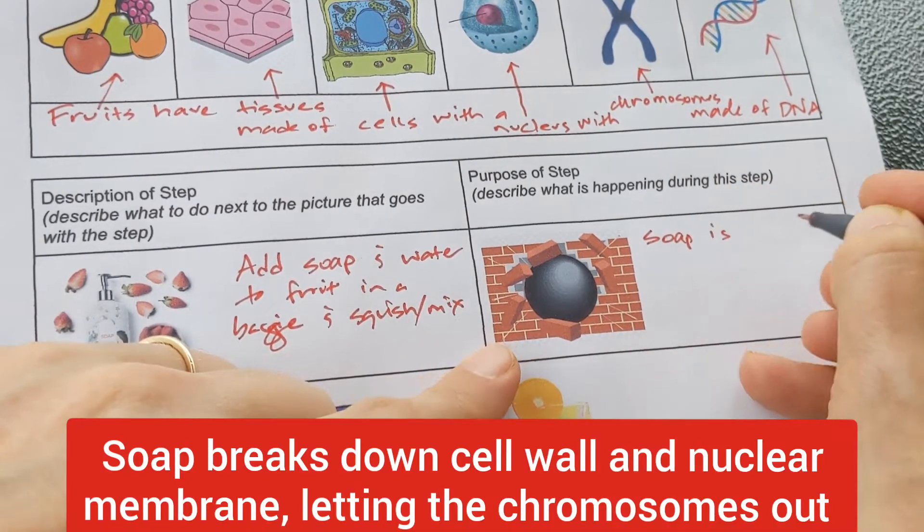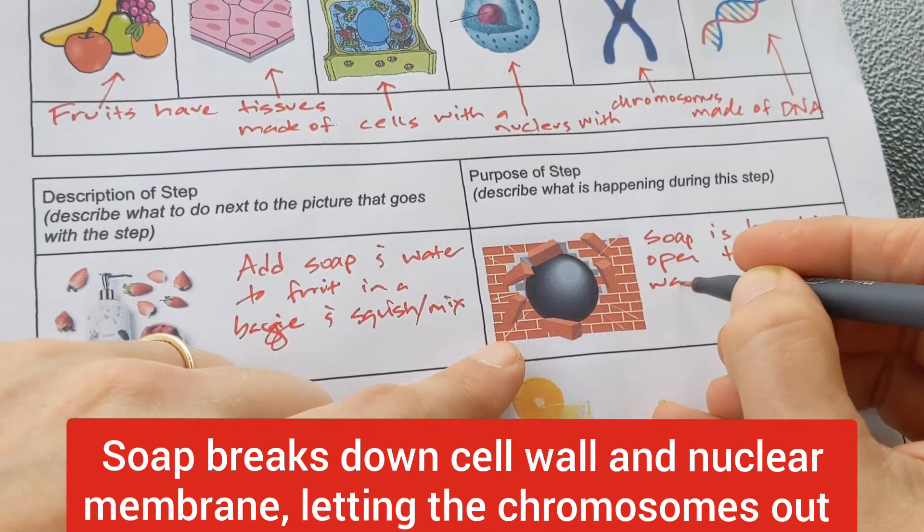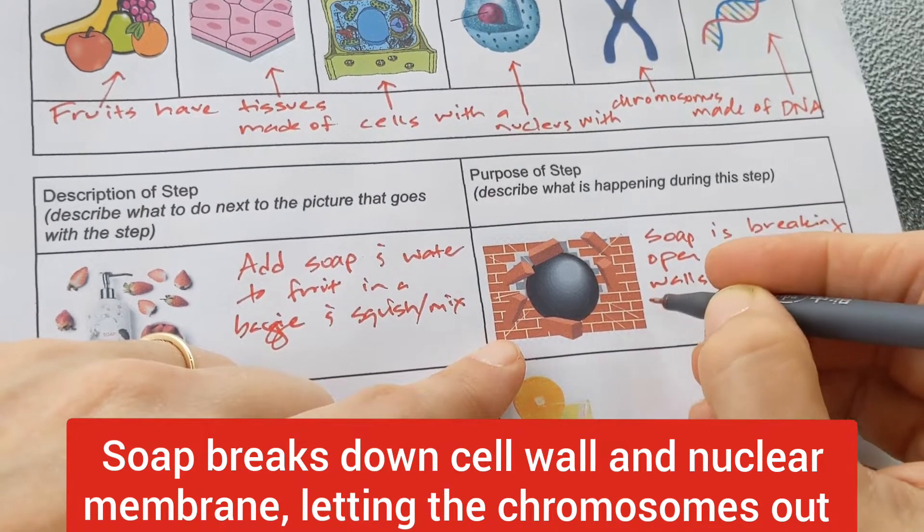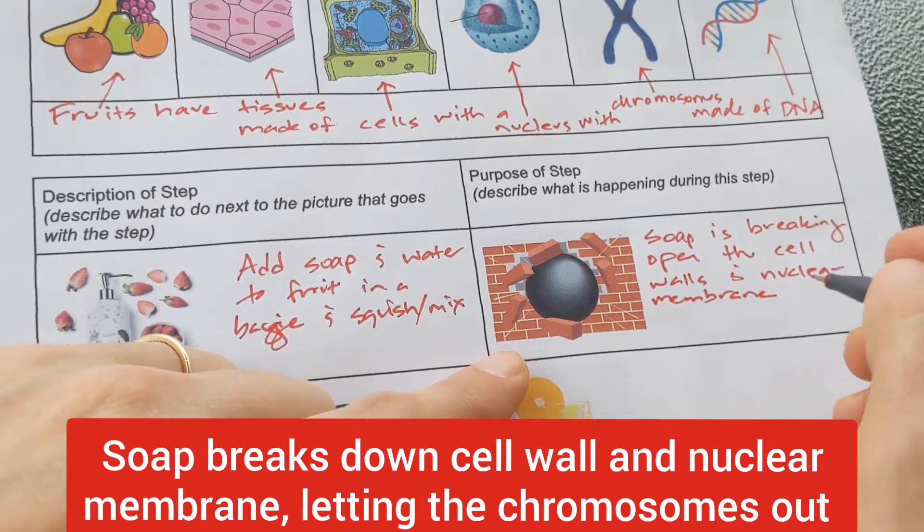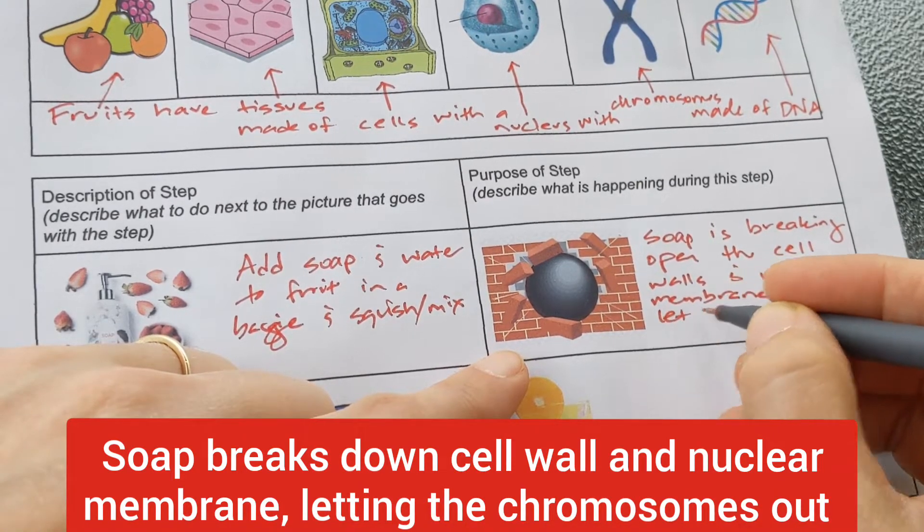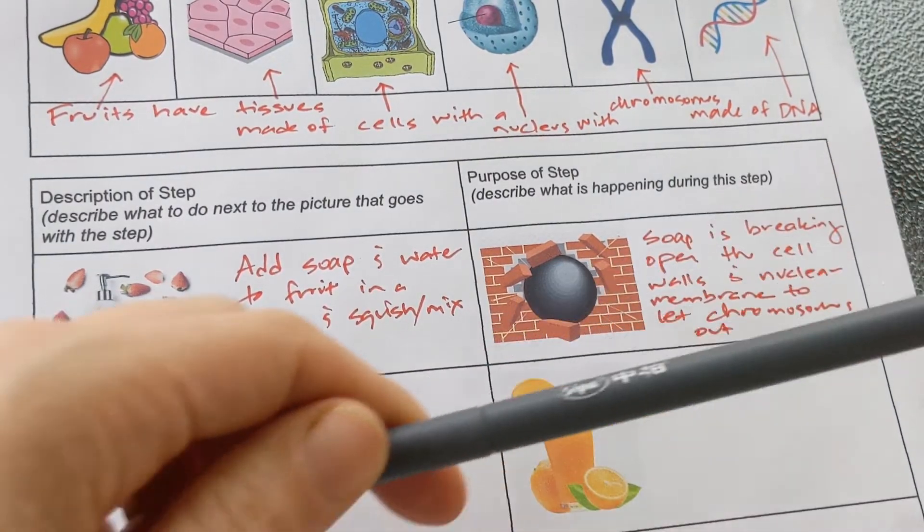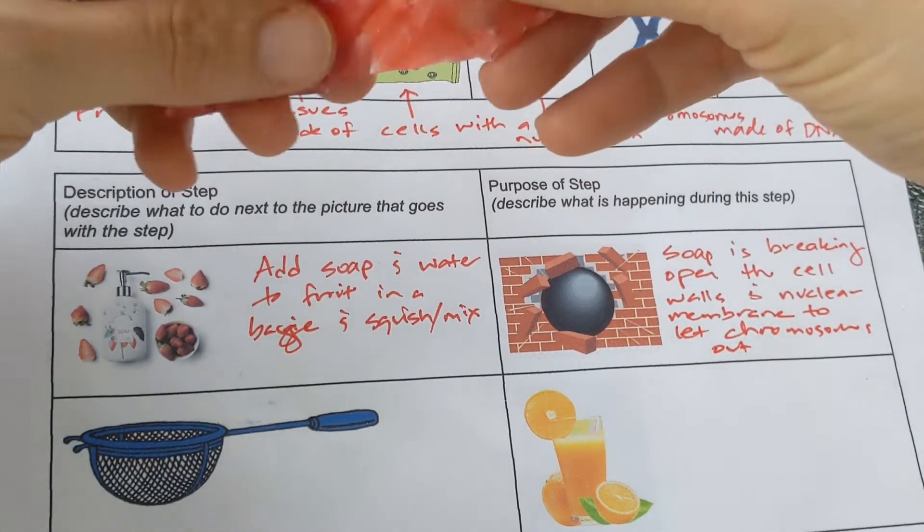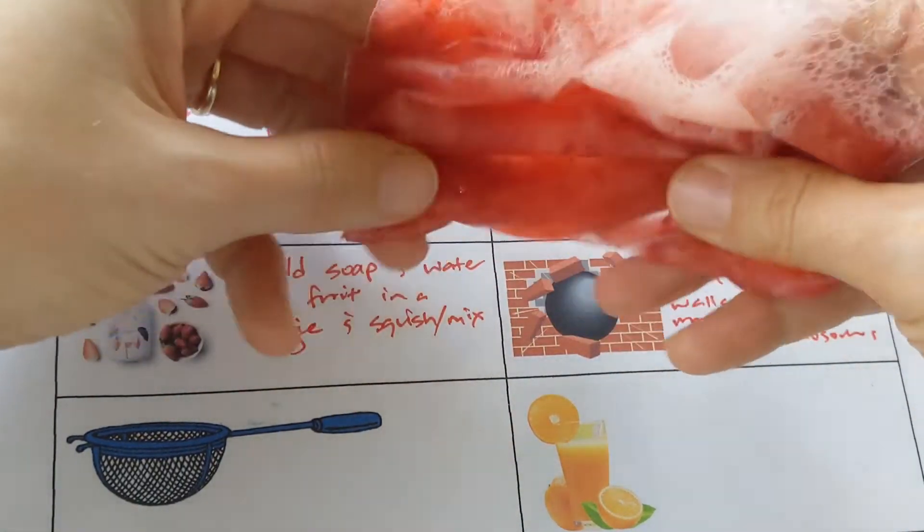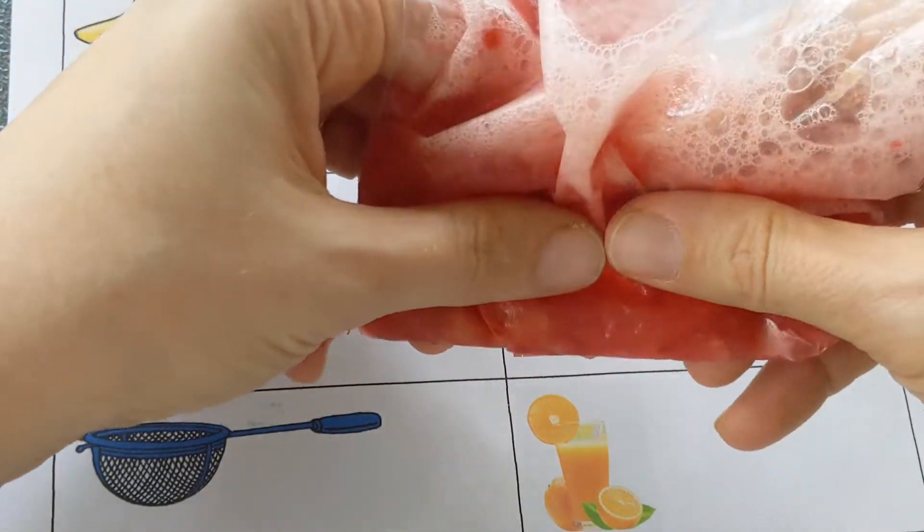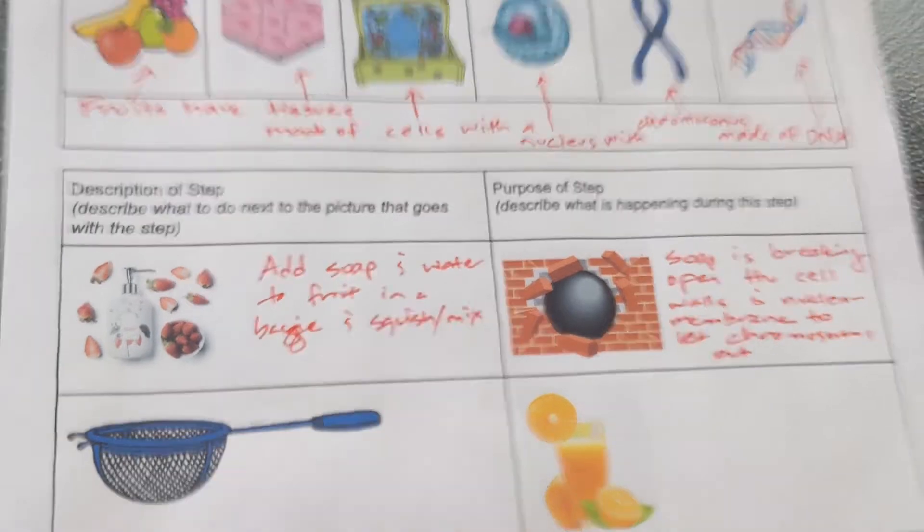The soap is breaking open the cell walls, but it's also breaking open the nuclear membrane. And the nuclear membrane is like the sac around the nucleus. The nucleus is kind of like a balloon. And if you pop the balloon, inside are the chromosomes. So we're going to let the chromosomes out. Those chromosomes are now free floating. The more you mix it, the better.